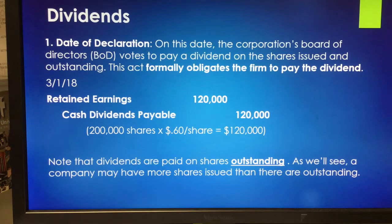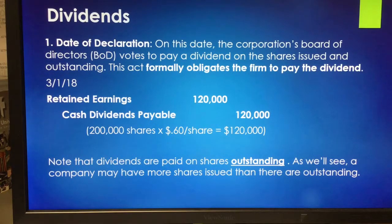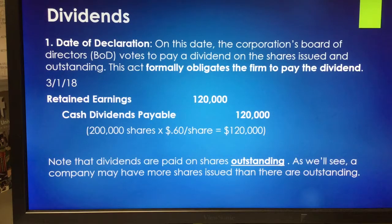On the date of declaration — March 1 — the board of directors votes to pay the dividend, which formally obligates the firm. We debit retained earnings and credit cash dividends payable for $120,000: that's 200,000 shares outstanding times $0.60. Dividends are paid only on shares outstanding. Cash dividends payable is a liability.